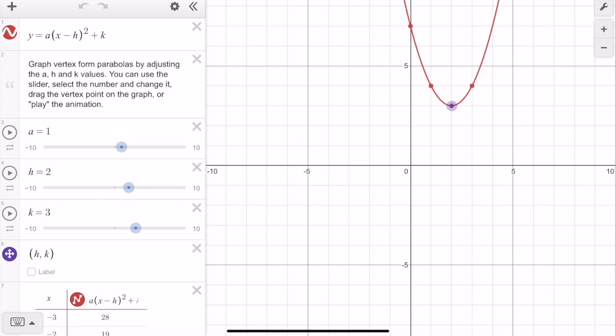So another part of your activity was that you were supposed to play around with the values for vertex form, and A times x minus h squared plus k is vertex form. Notice that when I move the h value, we're changing it from left to right, and I'm going to change it back to 0, to its original function.